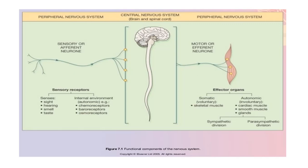Peripheral nerves carry signals to us through sensory receptors — sight, hearing, smell — and these signals travel to the brain via the CNS, and from there through efferent motor neurons to the effector organs.